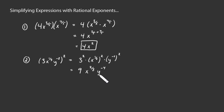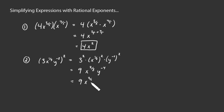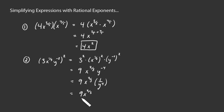Generally, we want our final form to have no negative exponents. Here we have y to the negative 4th, which is the same as multiplying by 1 over y to the positive 4th power. Going ahead and doing that multiplication puts the y to the 4th in the denominator, and that right there is our final answer.